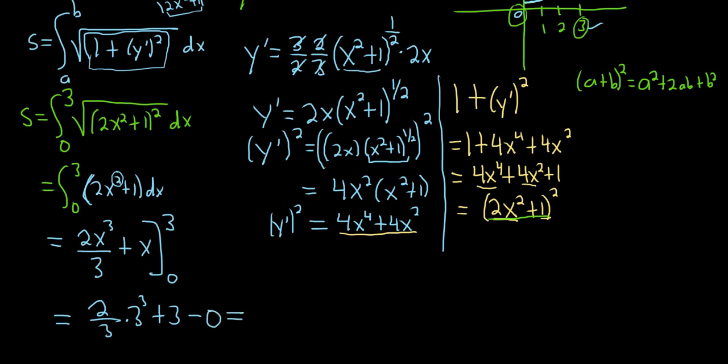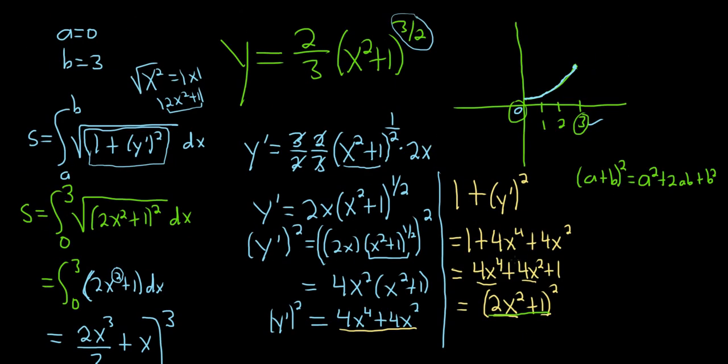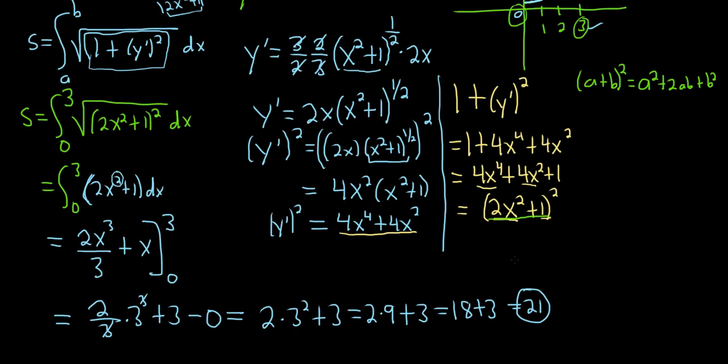This is equal to, so these 3s cancel, so this gives us 2 times 3 squared plus 3. So that's 2 times 9 plus 3, so that's just 18 plus 3 which is equal to 21. So 21 is the length of the arc from 0 to 3. I hope this video has been helpful.